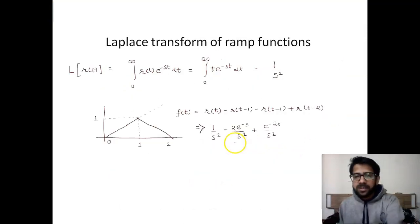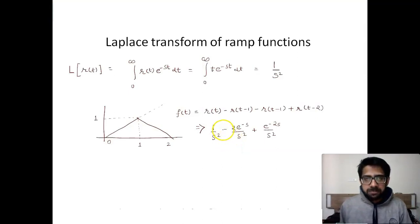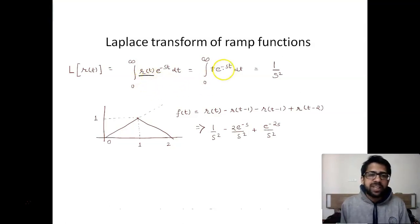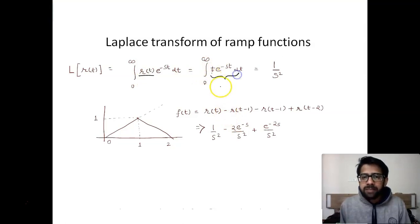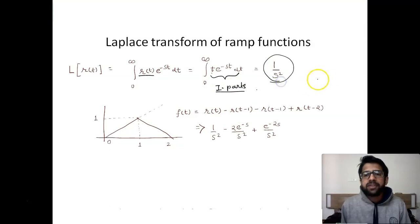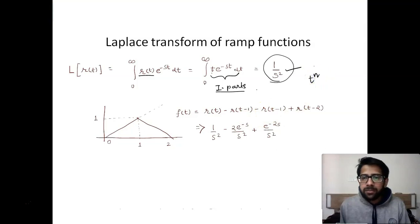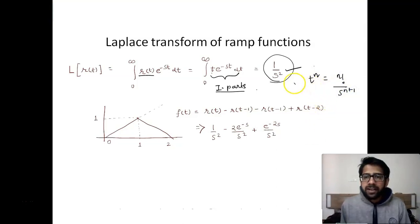Now let us see the Laplace transform of the ramp function. The ramp function r(t) equals t for 0 to infinity. Solving this by integration by parts, we get 1 upon s squared as the Laplace transform. This matches the general formula: the Laplace transform of t raised to n equals n factorial divided by s raised to n plus 1.